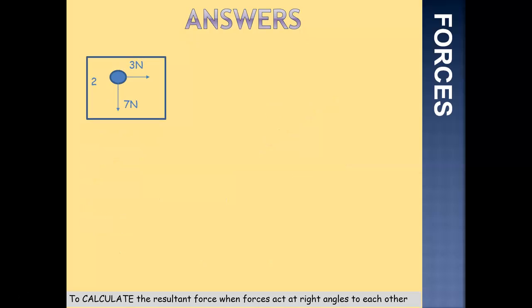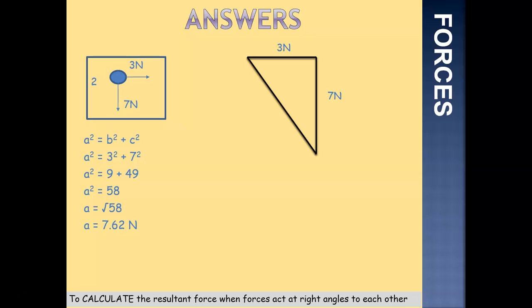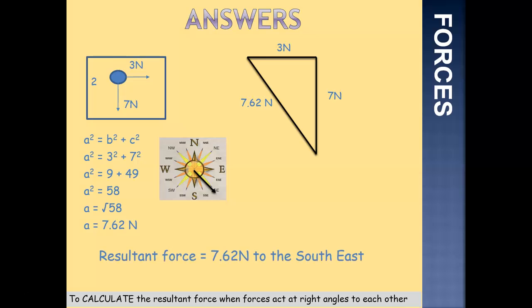Question 2: 3 newtons acting to the east and 7 newtons acting to the south. The first step is to draw our triangle, ensuring that our hypotenuse goes in the same direction the resultant force would be going. We then use Pythagoras' theorem: 3 squared plus 7 squared. 3 squared is 9, 7 squared is 49. 9 plus 49 gives us 58. The square root of 58 is 7.62, so we have 7.62 newtons. Using our compass points, it's going to the east and to the south — a southeasterly direction. The resultant force is 7.62 newtons to the southeast.